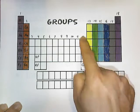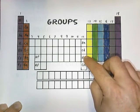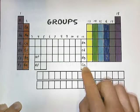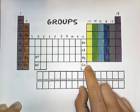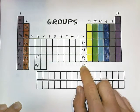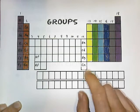Group 12 contains zinc, cadmium, mercury, and copernicium. This is a relatively new element and it's got the atomic number of 112.